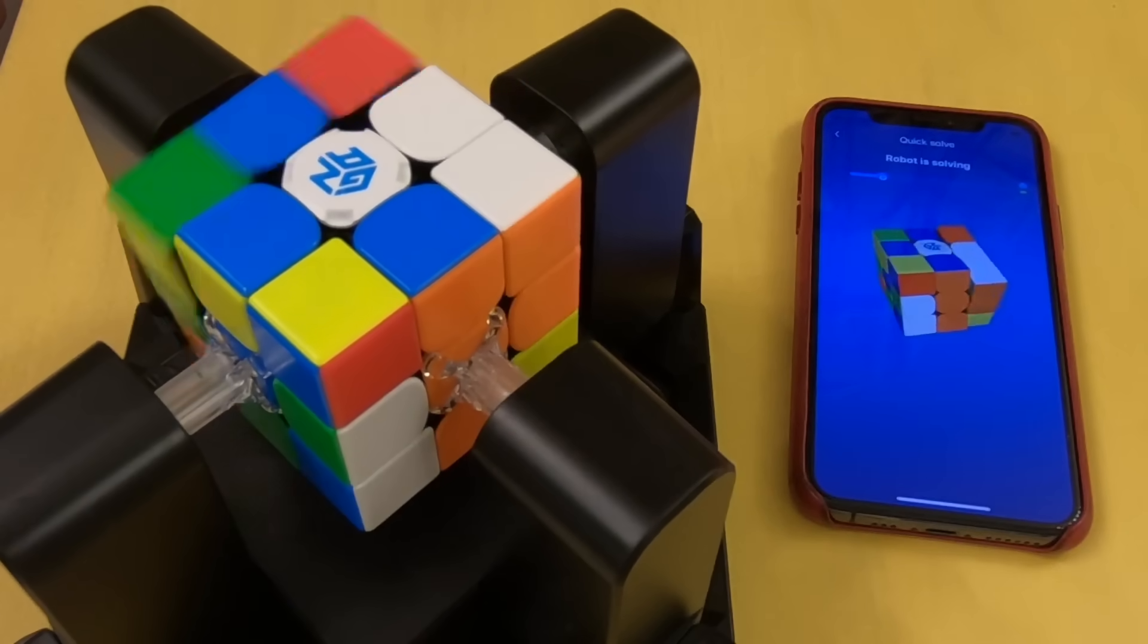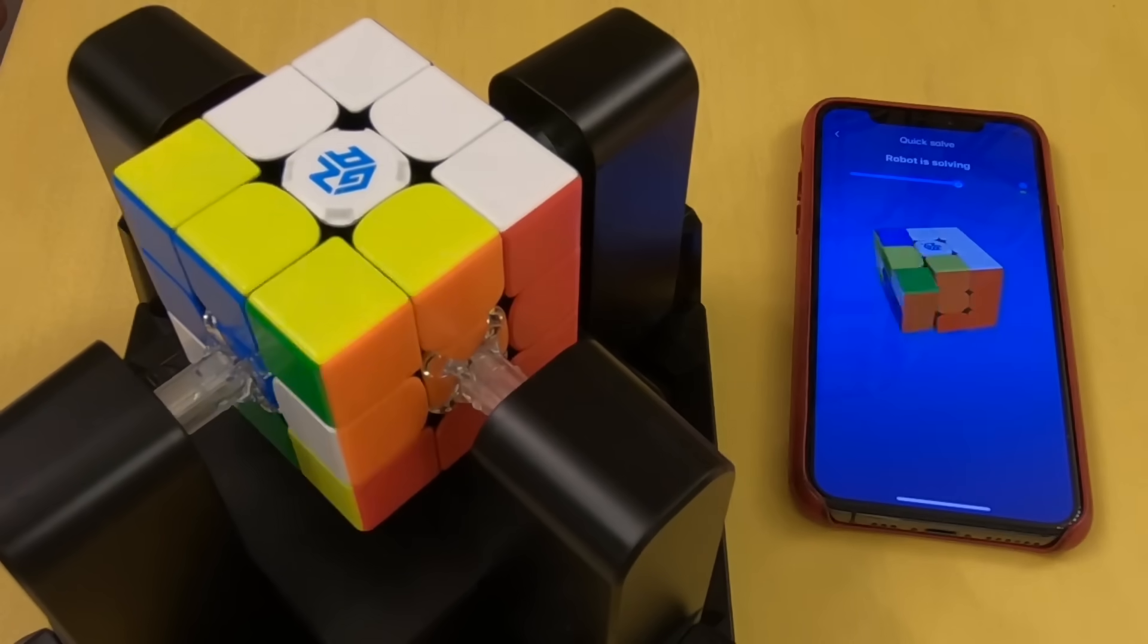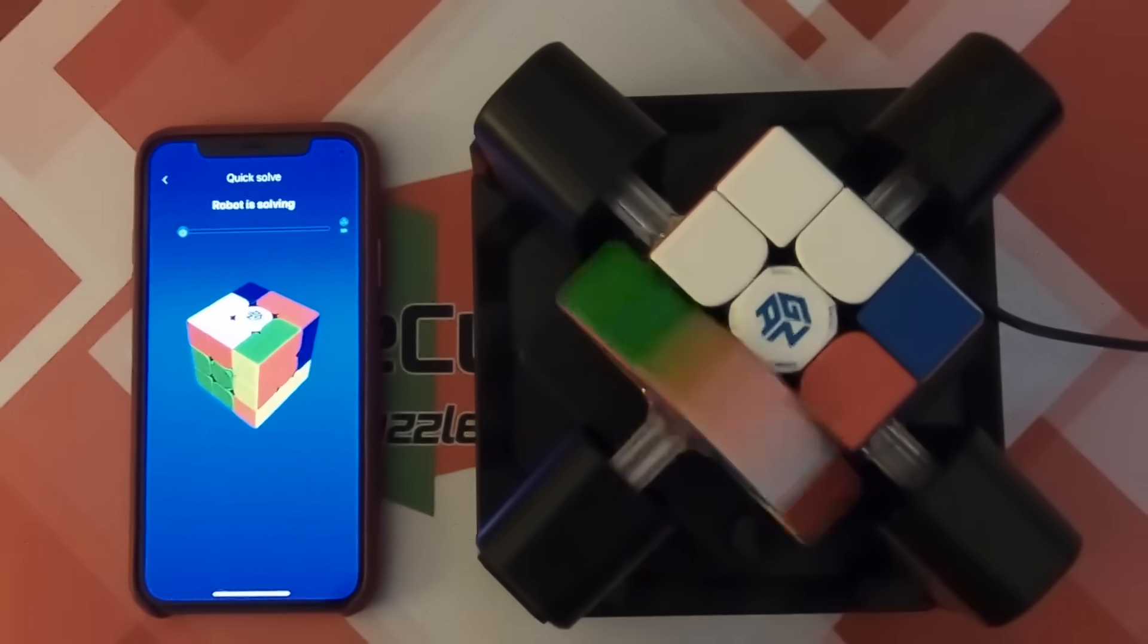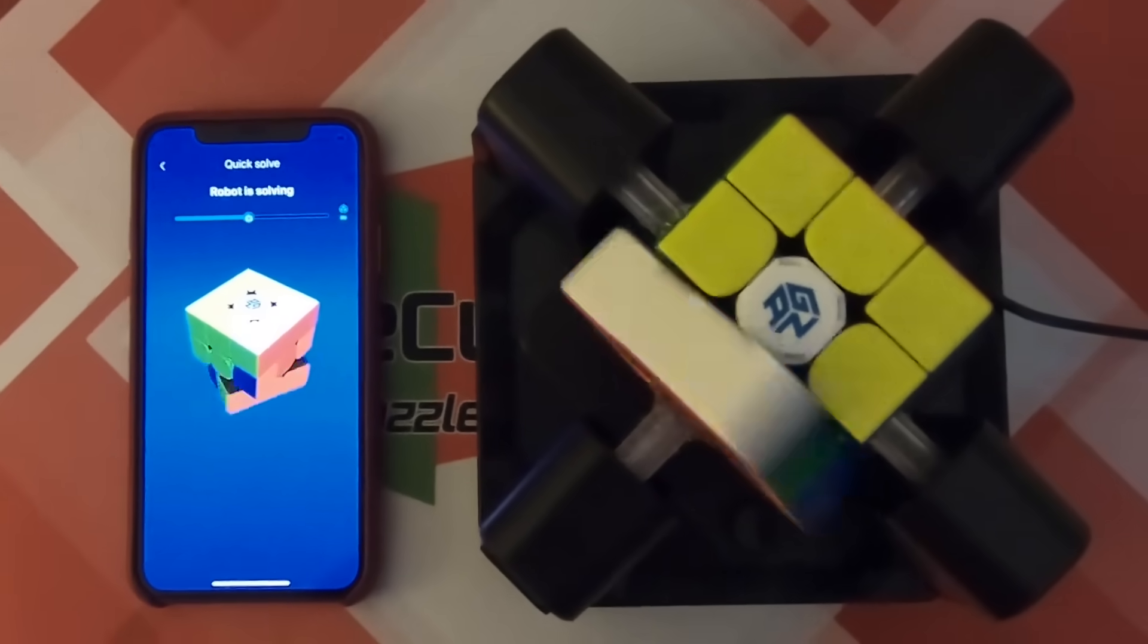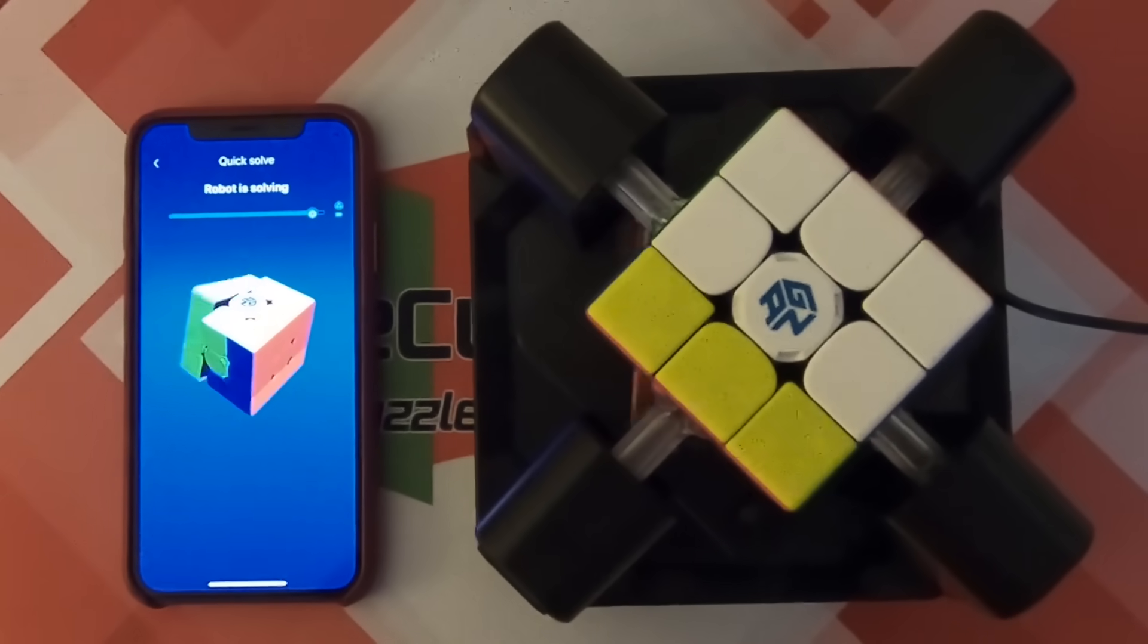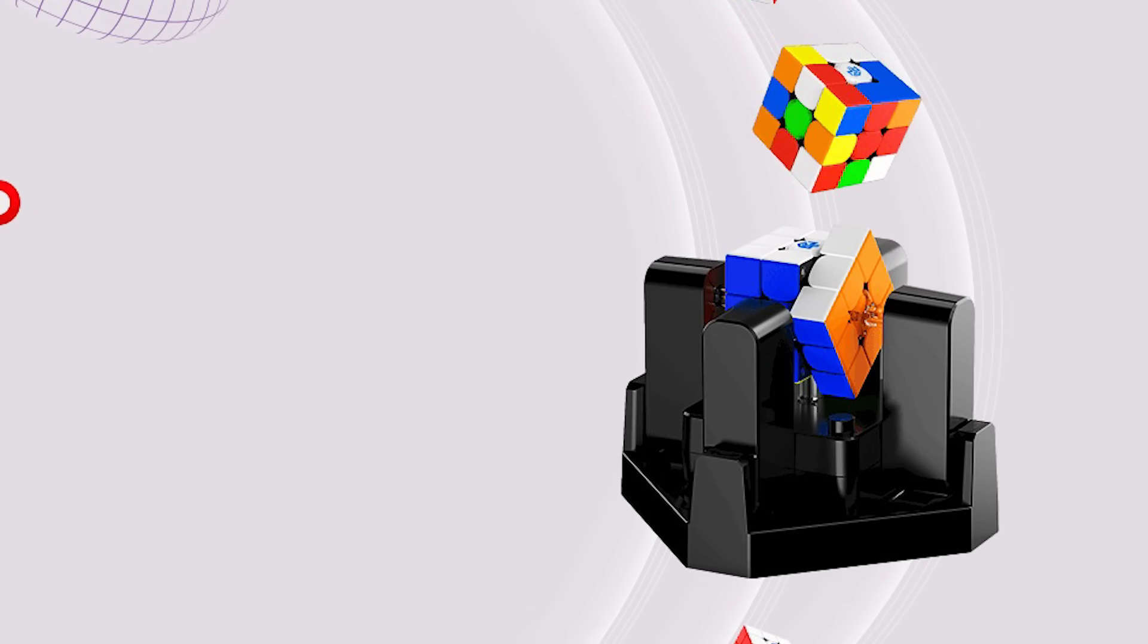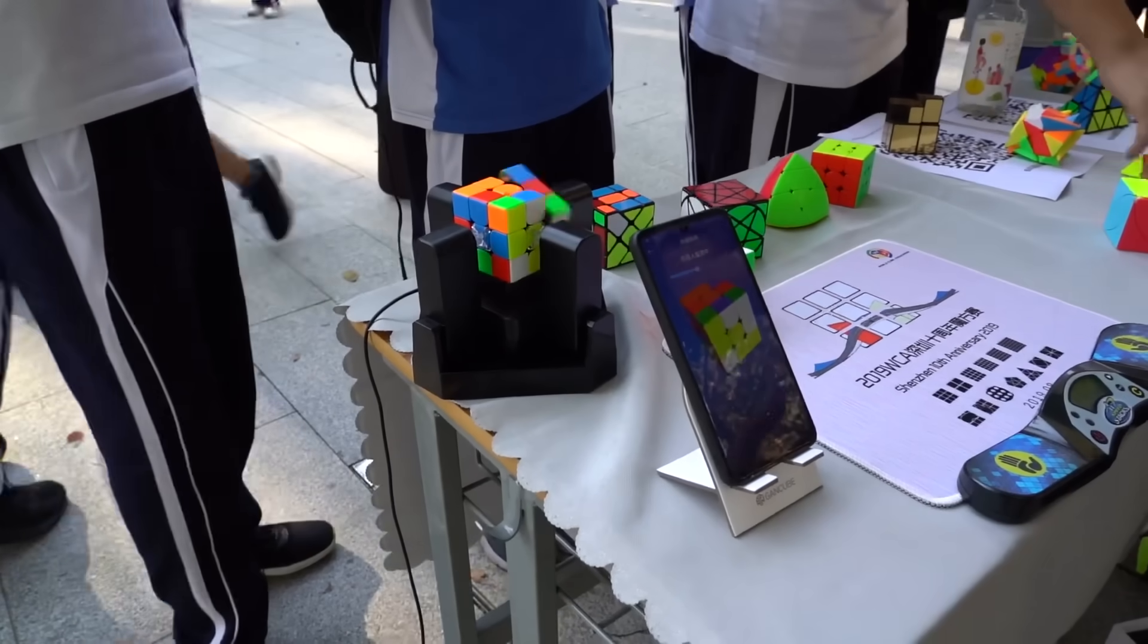A Chinese cube brand, GAN, developed a robot that can both scramble and solve a 3x3 Rubik's cube using a smartphone app. For now, it can only solve GAN 356i cube. It can solve the cube in less than 15 seconds after calculating the best solving path in 0.01 seconds.